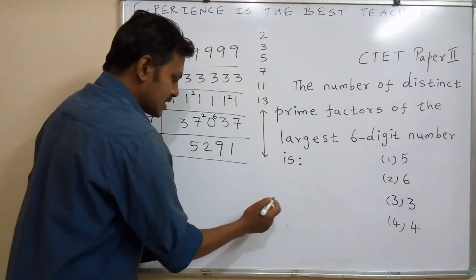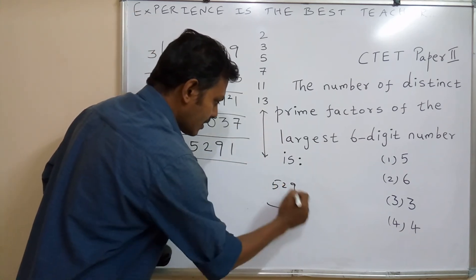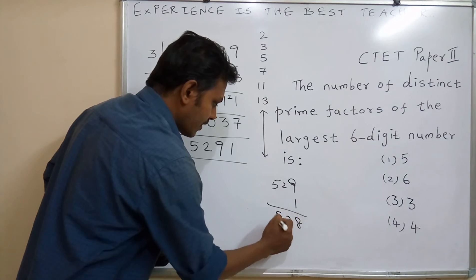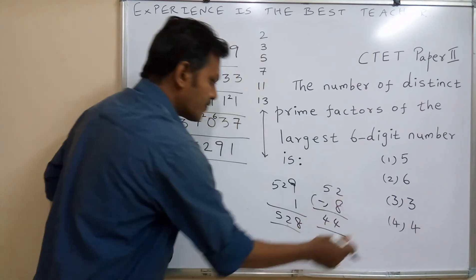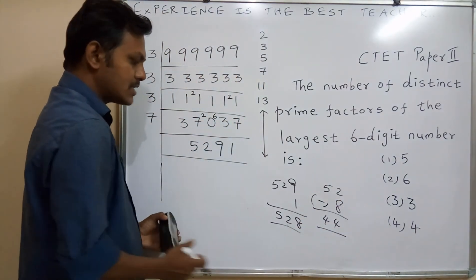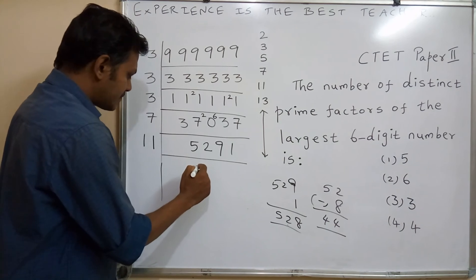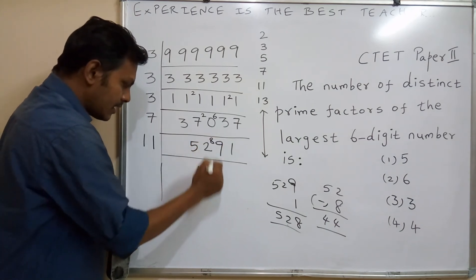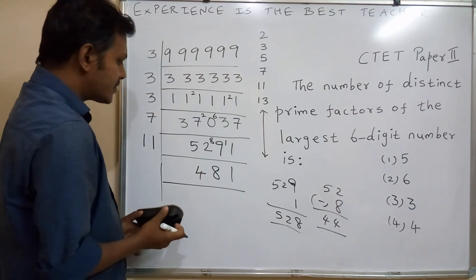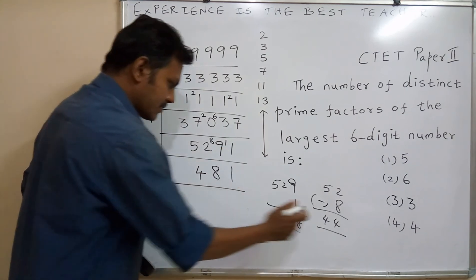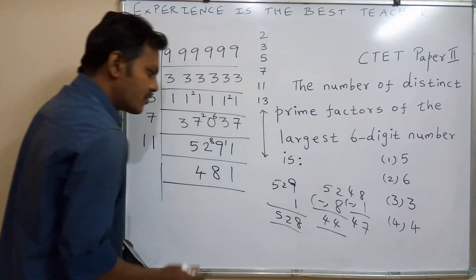The divisibility rule for 11: subtract the last digit from the rest of the number. For 5,291: subtract 1 from 529 to get 528; then subtract 8 from 52 to get 44. Since 44 is divisible by 11, the number 5,291 is divisible by 11, giving a quotient of 481.